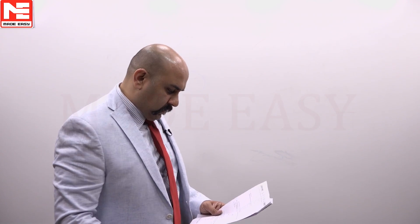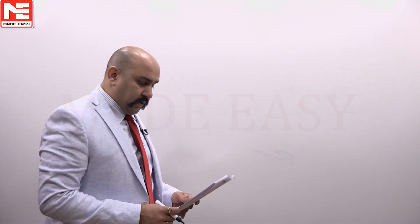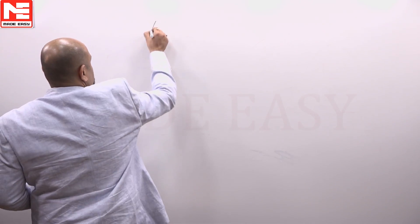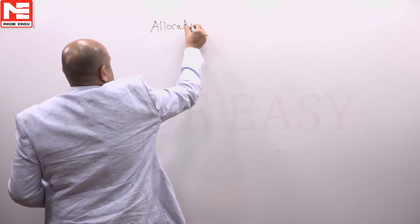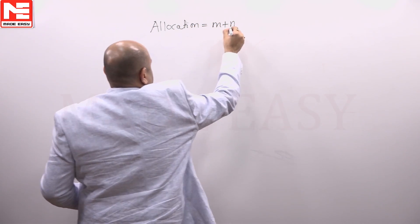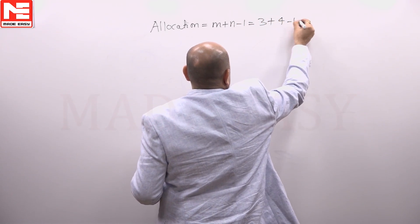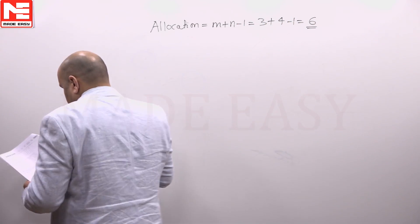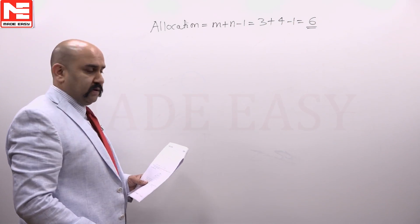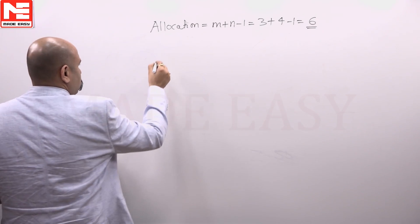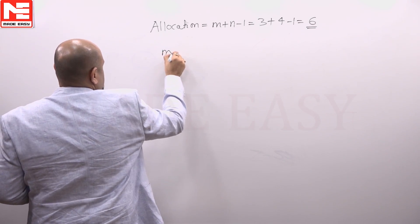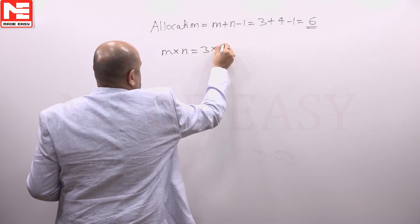A transportation problem consists of 3 sources and 4 destinations with appropriate rim conditions. The total number of allocations in a basic feasible solution is given by m plus n minus 1, that equals 3 plus 4 minus 1, which is 6 allocations. The total number of possible allocations in a 3 by 4 matrix is m into n, that is 3 into 4, which equals 12.